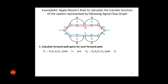Next, we check how many loops there are. There are four loops: L1, L2, L3, and L4. Their gains are: L1 = G2*H2, L2 = H3*G3, L3 = G6*H6, and L4 = G7*H7.